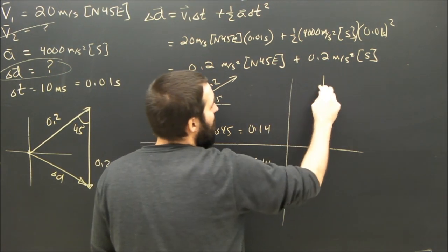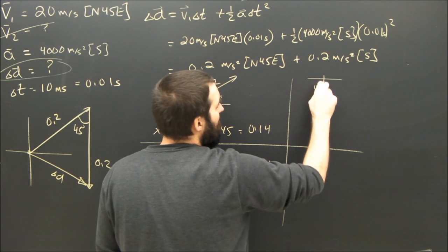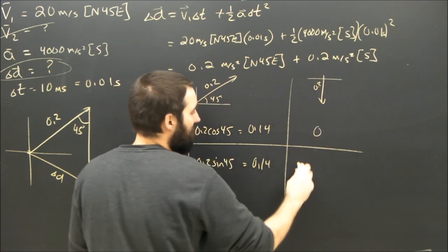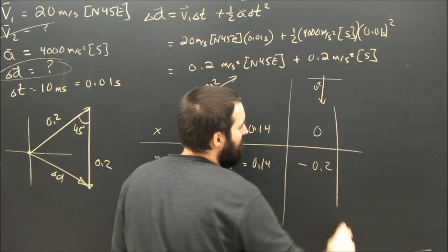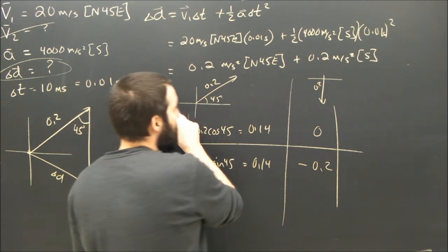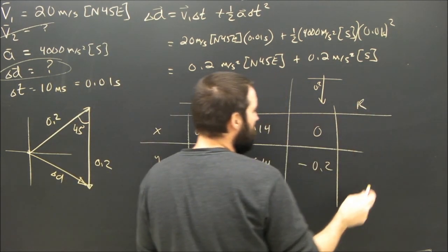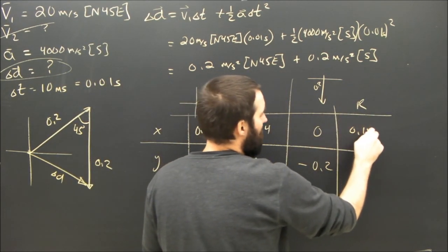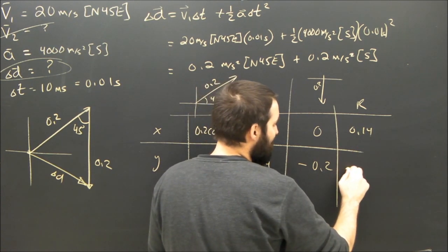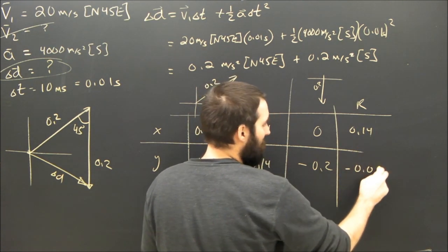The y component is just straight down, 0.2, so the x component is 0. The y is negative 0.2. When I add these guys up to find my totals, I find the total x is 0.14. The total y is negative 0.06.